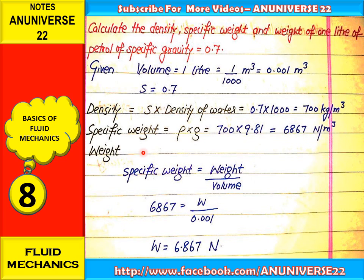The last one is the weight. Specific weight is the ratio of weight upon volume. Specific weight we calculated in the last step is 6867 newton per meter cube, and volume is given as 0.001 meter cube. So from here, the weight is equal to 6.867 newton.